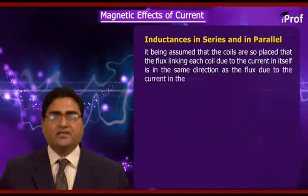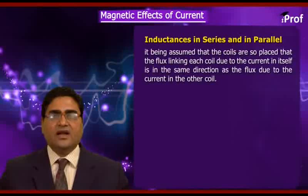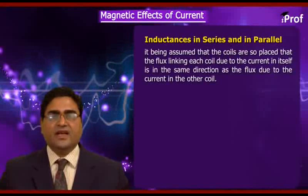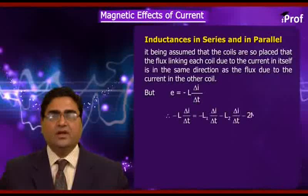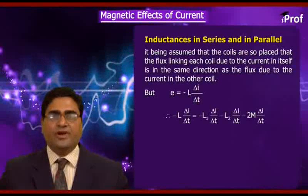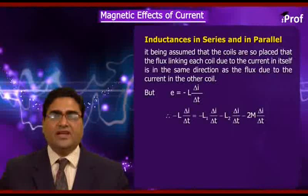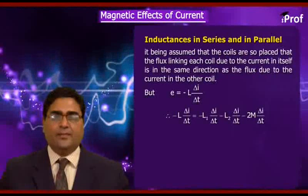It is assumed that the coils are so placed that the flux linking each coil due to the current in itself is in the same direction as the flux due to the current in the other coil. Since E = −L(ΔI/Δt), we get: −L(ΔI/Δt) = −L1(ΔI/Δt) − L2(ΔI/Δt) − 2M(ΔI/Δt).